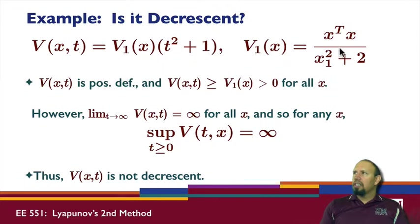How about this function? Is it decrescent? V1 is this expression. We notice that this expression is greater than or equal to 0 for all x, and is 0 only if x is equal to 0. V of x of t is greater than or equal to V1 of x for all x.